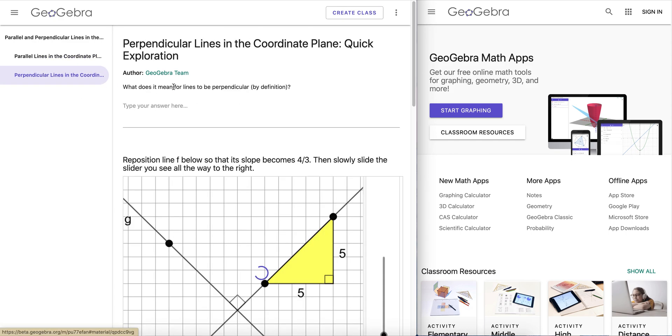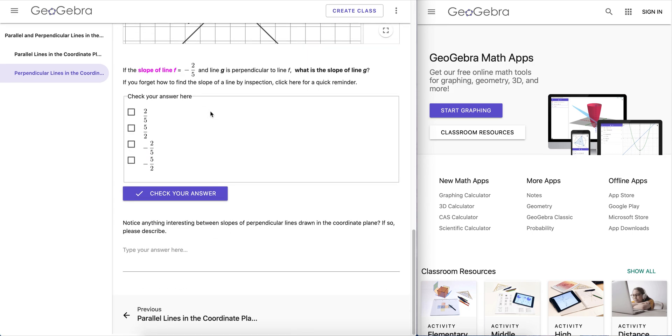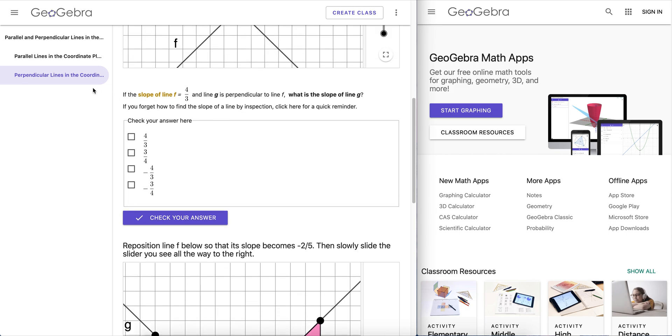The second activity within this book contains four questions and two applets. Hence, we will get a total of six student tasks from this activity.